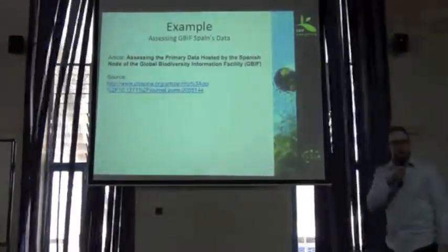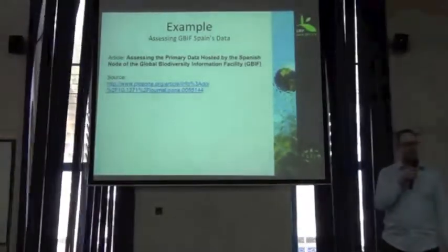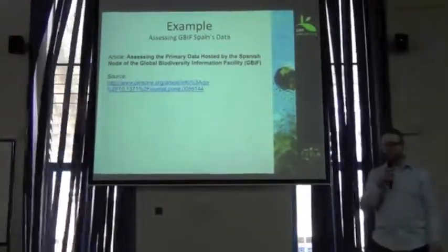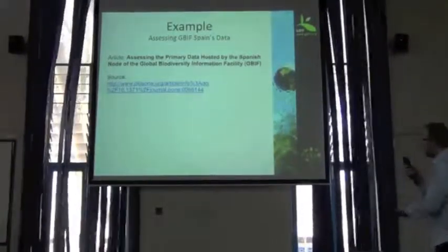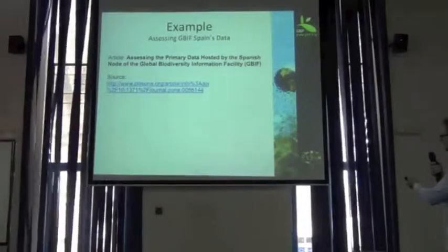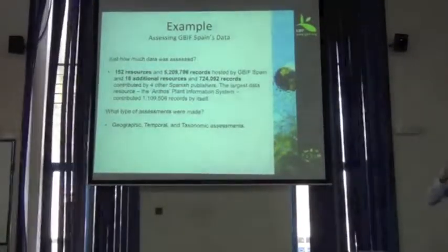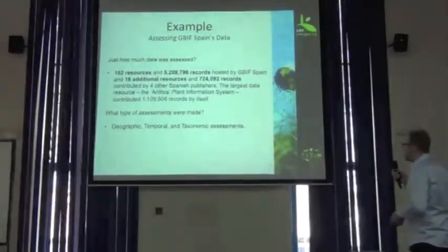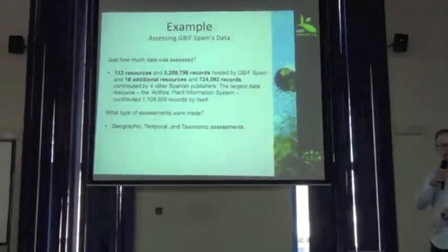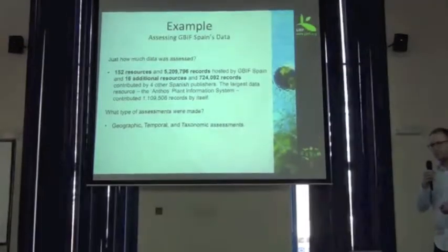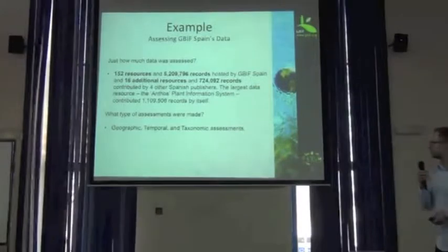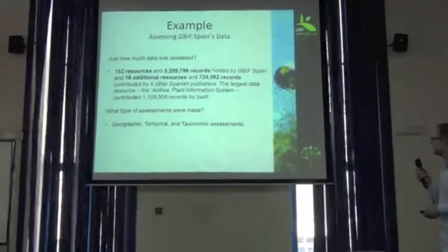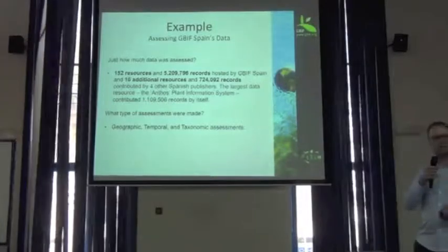Now, an interesting example I'm going to talk to you about is an assessment that was made on the GBIF Spain dataset. It's particularly based on a paper that was written by Javier, who is in our presence today. By way of brief introduction: there are over 5 million records hosted by GBIF Spain alone, over 152 different resources making up those 5.2 million records, plus an additional 16 resources with another 700,000 records from other publishers, and the largest data center has about 1.1 million records.